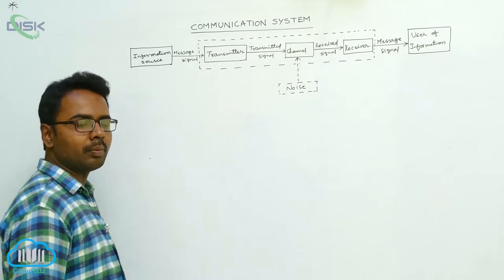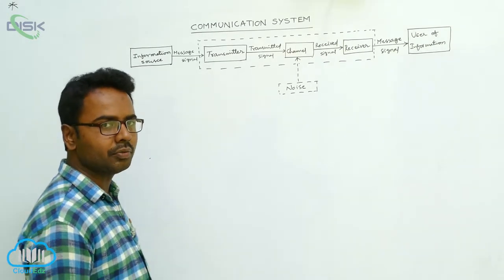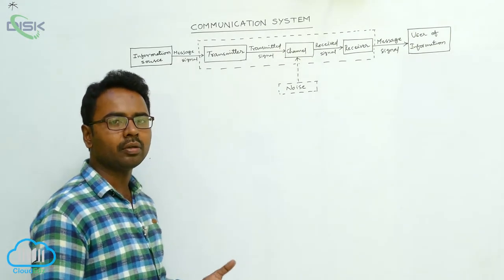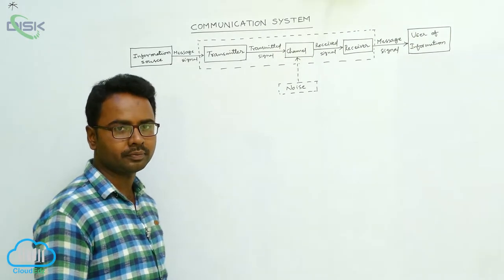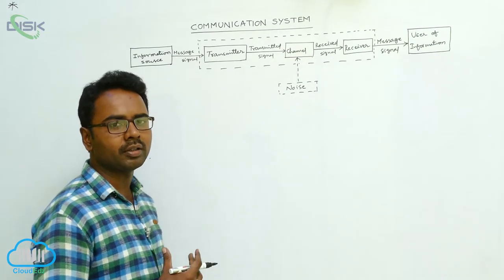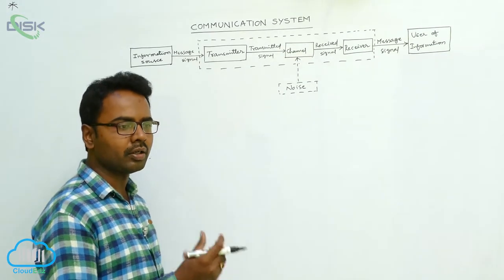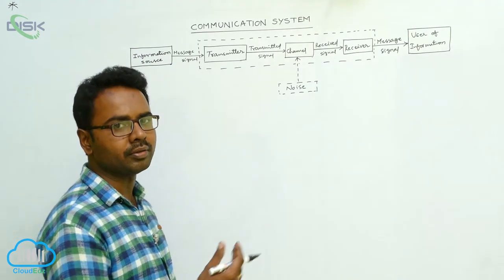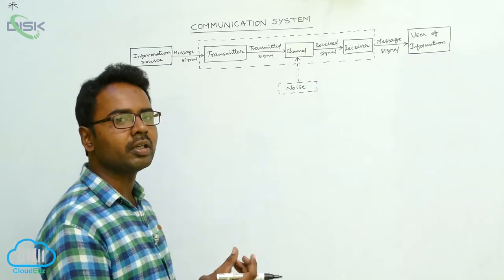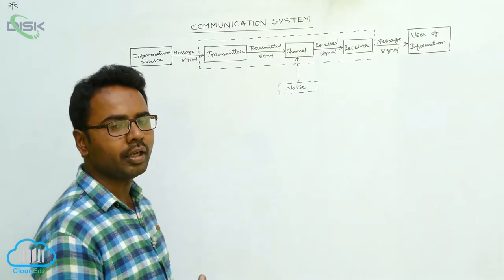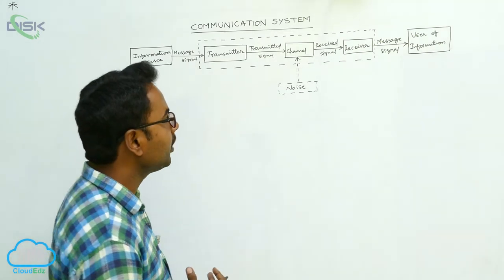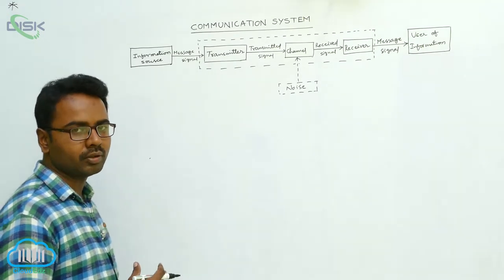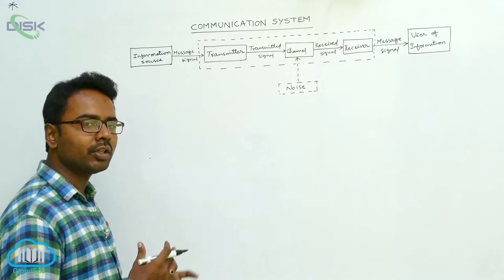In this lesson, we are going to see communication systems. First of all, let's know what is communication. Communication is nothing but the act of transmission of information. When we are talking with another person, we are transmitting information to them — that means we are communicating. So communication is the act of transmission of information.